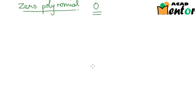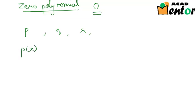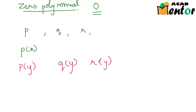Now let's see how we denote these polynomials. We usually use the variables p, q, or r to denote polynomials. For example, a polynomial in the variable x can be written as p of x, while a polynomial in the variable y can be written as p of y, or q of y, or r of y. Another polynomial in both variables x and y could be written as p of x comma y.